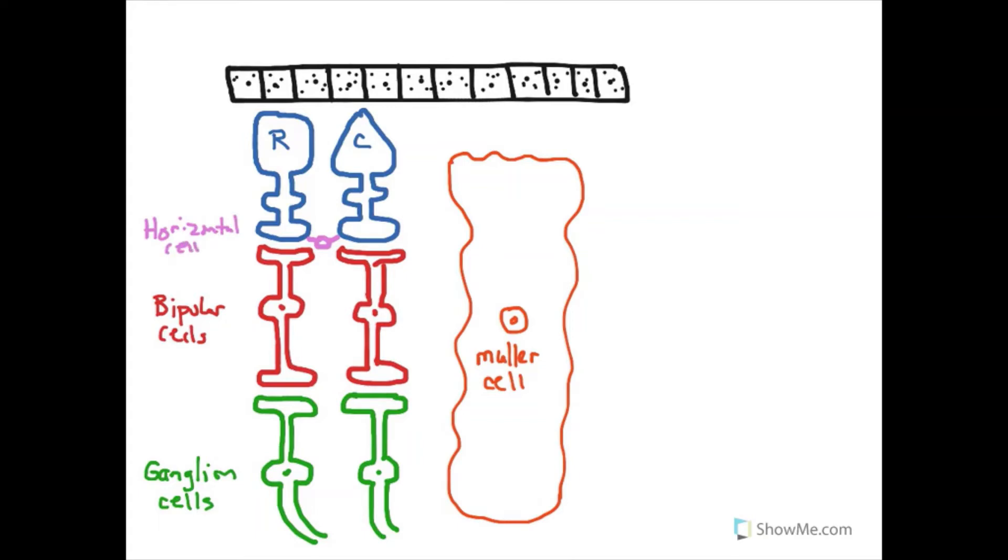And lastly I want to add a cell called an amacrine cell. Let's just use this deep dark blue for that. We'll use a deep dark blue here for an amacrine cell.